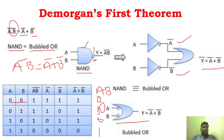Now we have to find A·B whole bar, which is the complement of A·B. So: 0 becomes 1, 0 becomes 1, 0 becomes 1, and 1 becomes 0. So A·B whole bar is 1, 1, 1, 0.